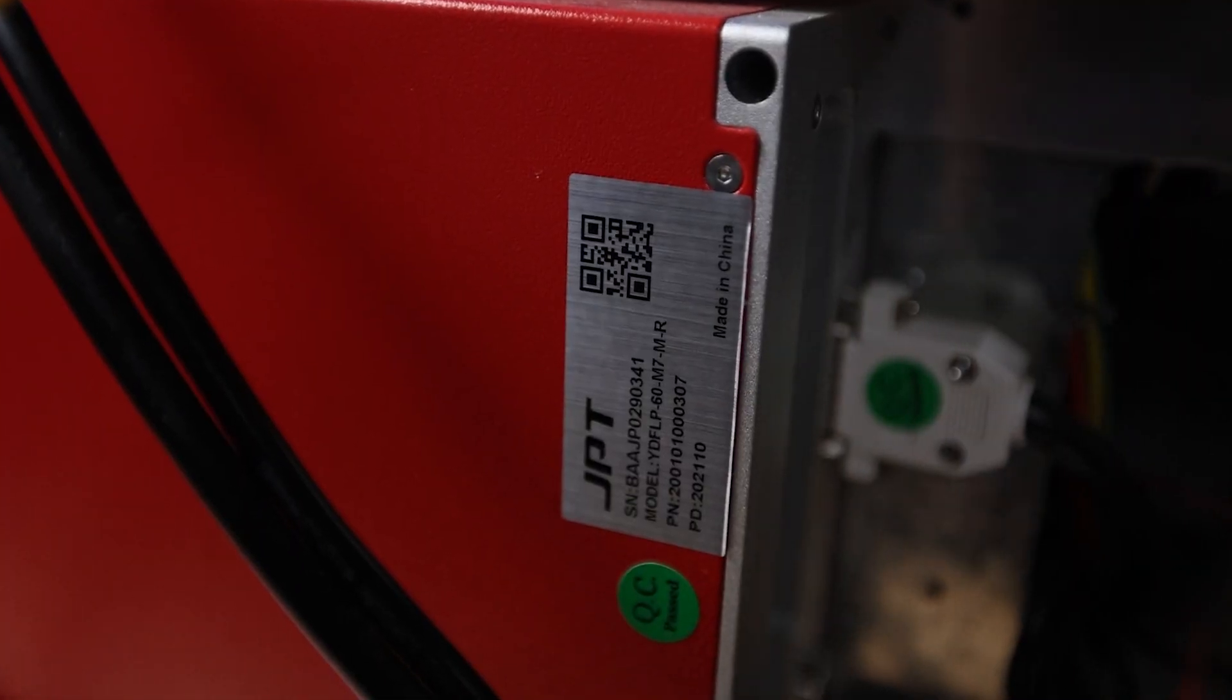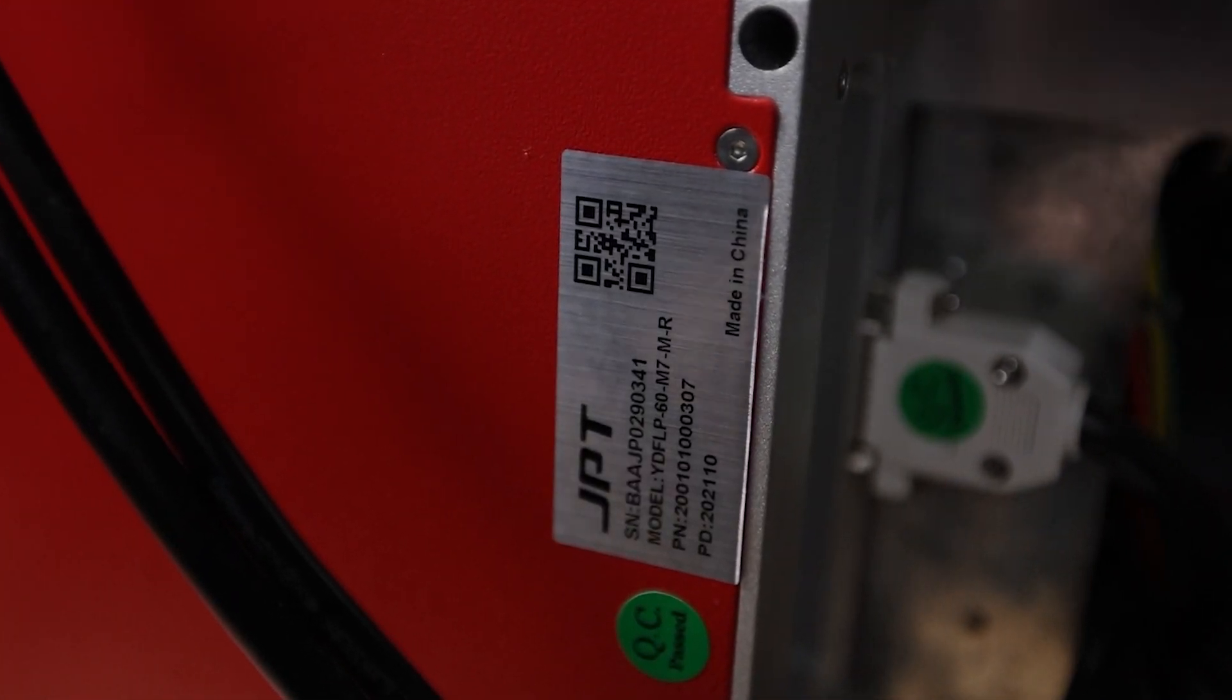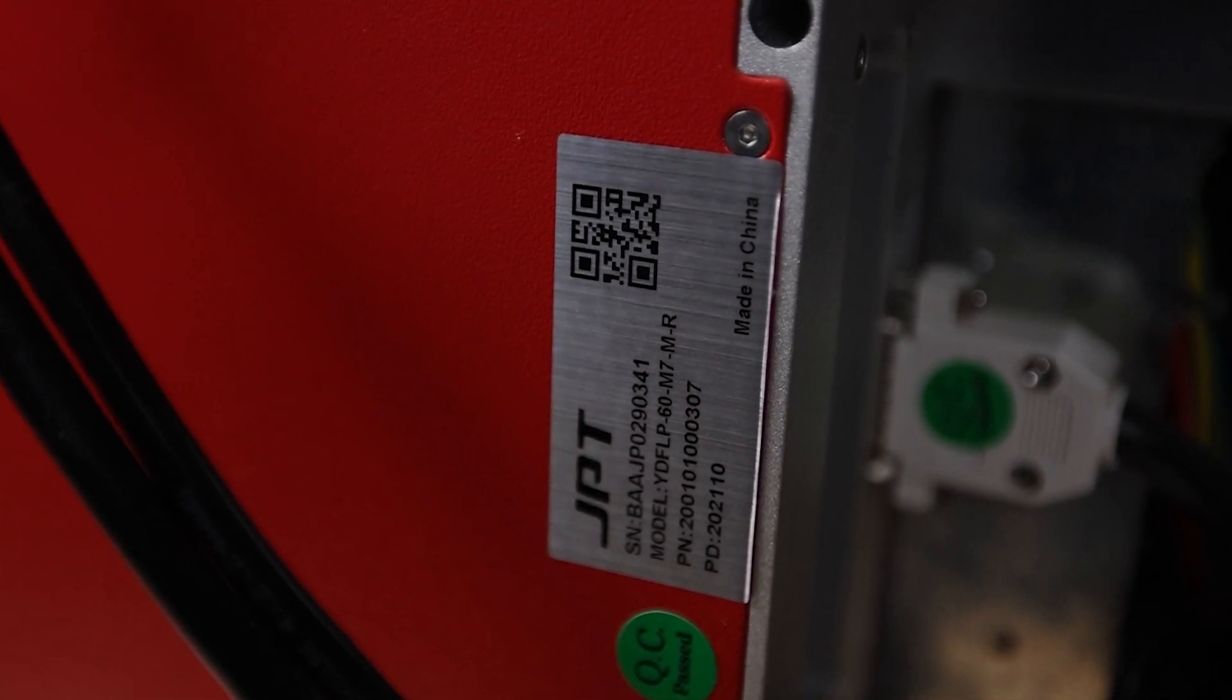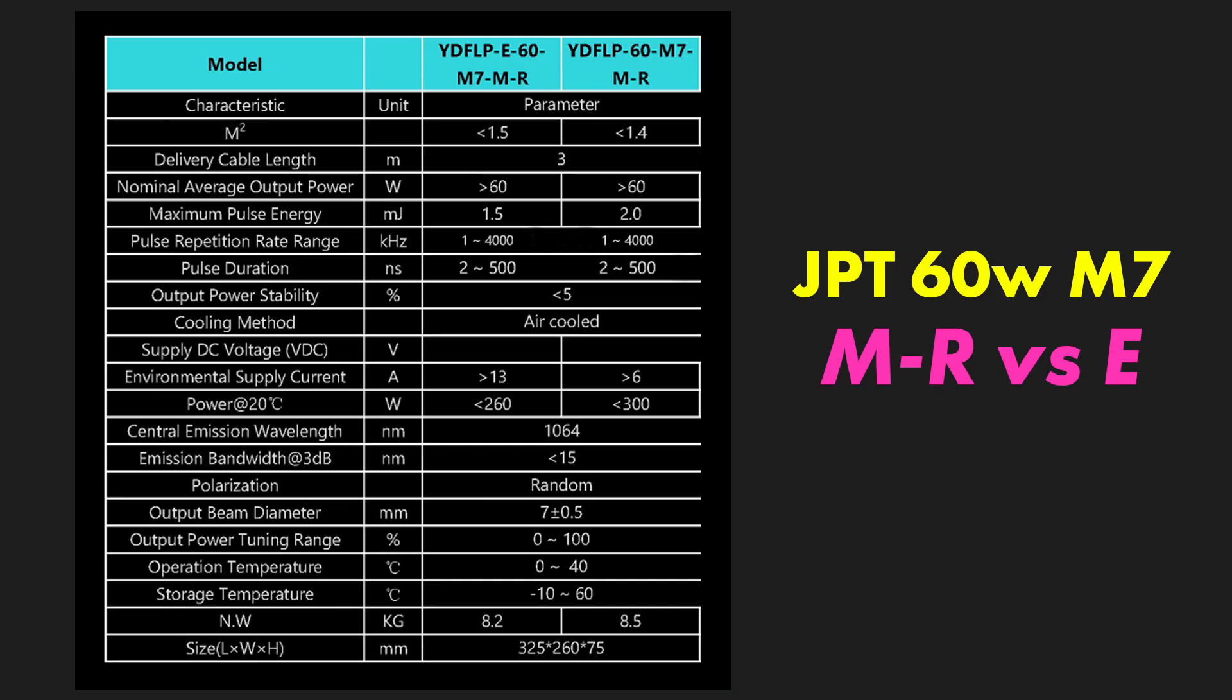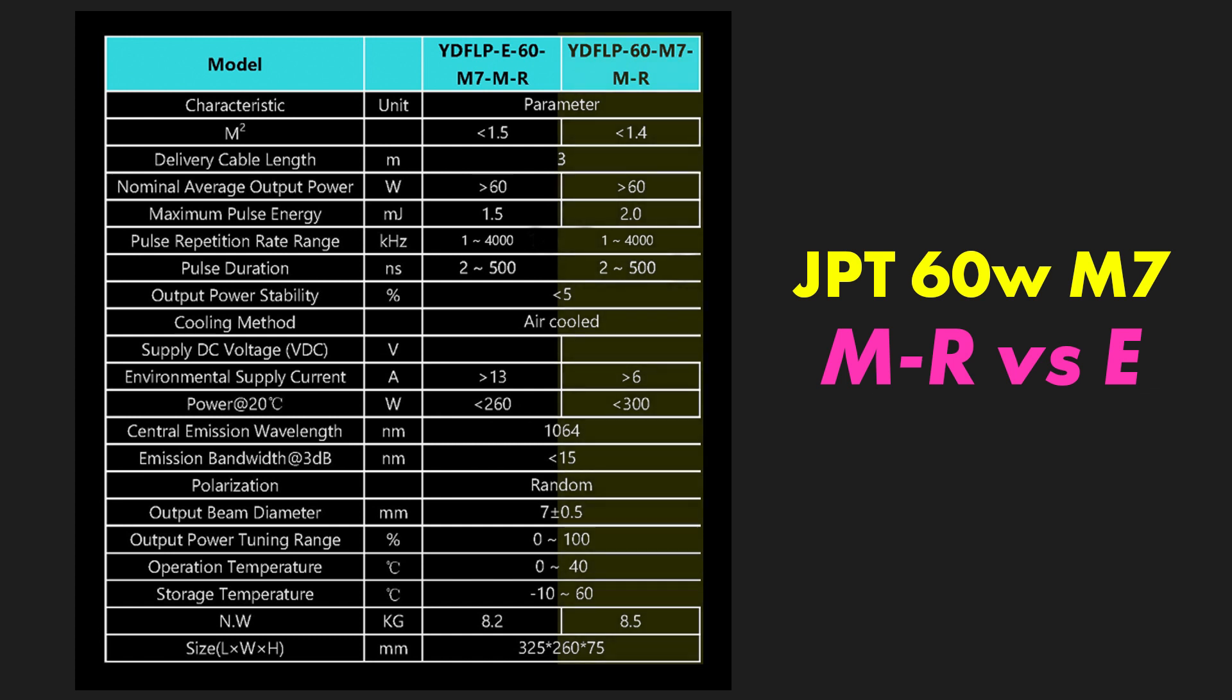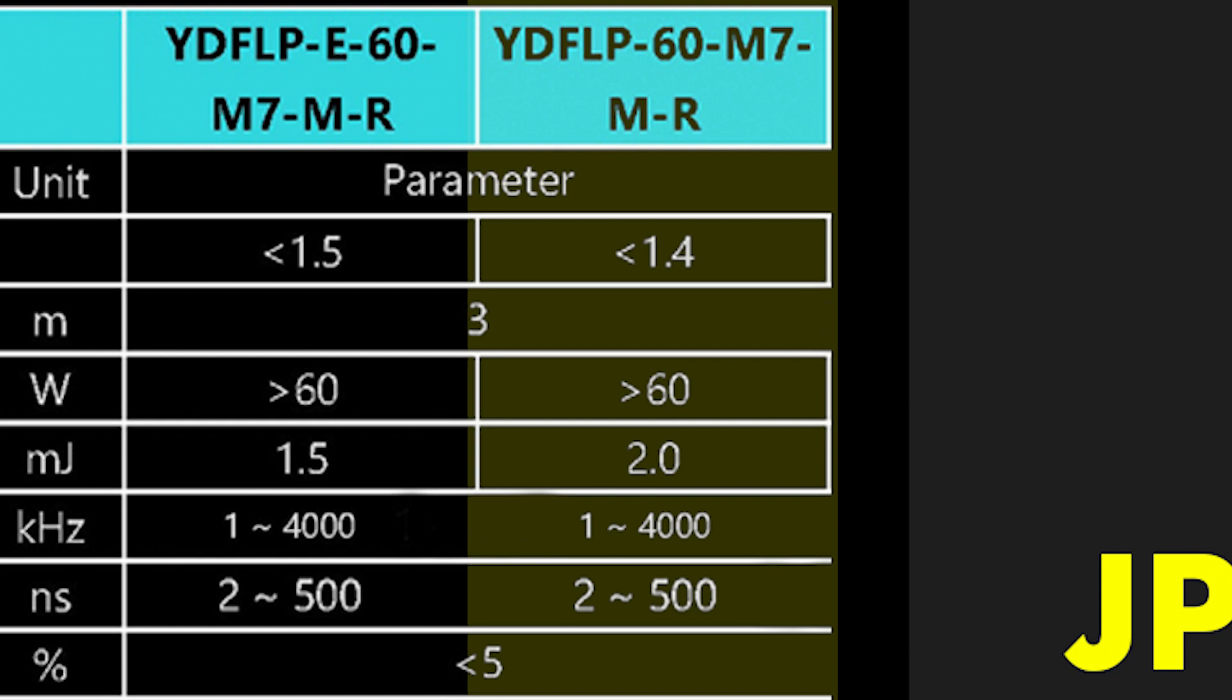It also features the 60M7M-R laser source by JPT, so you'll be treated to a massive frequency range of 1-4000 kHz and a pulse width range of 2-500 ns. Perfect for those looking to complete work quickly and efficiently, and great for operators looking to mark plastic or experiment with color marking on compatible materials.